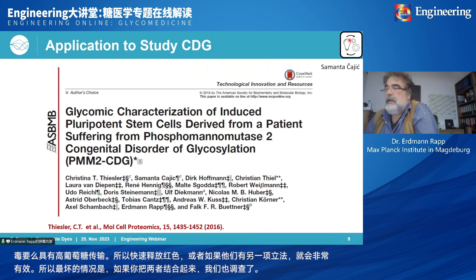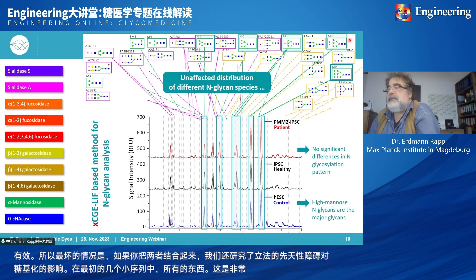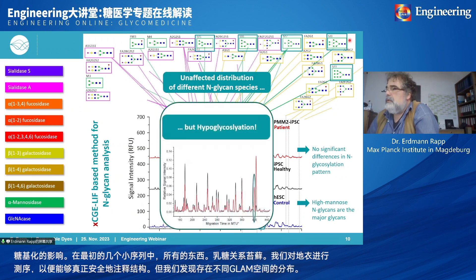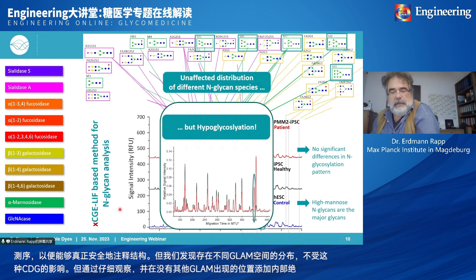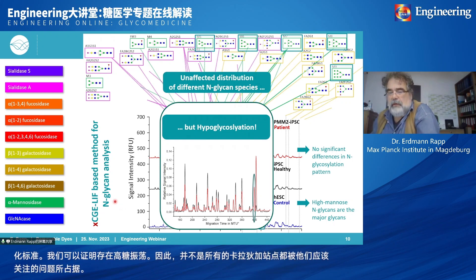We also investigated the effect of congenital disorders of glycosylation (CDG) on glycosylation itself, published in MCP. We sequenced down all the structures from very complex total cell lysates. We found that the distribution of different glycan species is unaffected by this kind of CDG. But looking closer and adding an internal absolute quantification standard, we could show there is hypoglycosylation — not all glycosylation sites are occupied at the ratio they should be — and this affects the health of the patient.